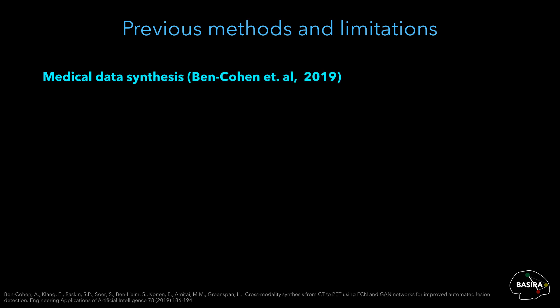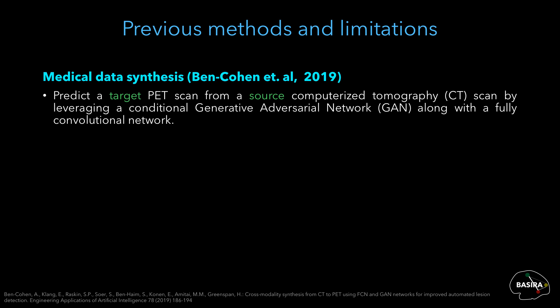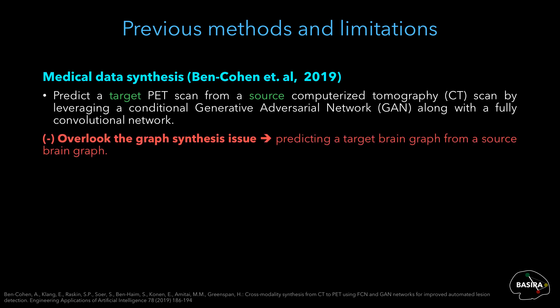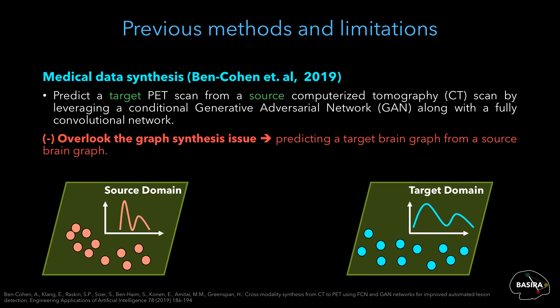There are many studies encountering the problem of medical data synthesis. A recent one predicts PET scans from computerized tomography or CT scans using conditional generative adversarial network and a fully convolutional network. However, it overlooks the graph synthesis issue, especially the prediction of a target brain graph from a source brain graph. Knowing that the source and target domains have different statistical distributions, there is a need to account for domain fracture when making such an inter-domain prediction.